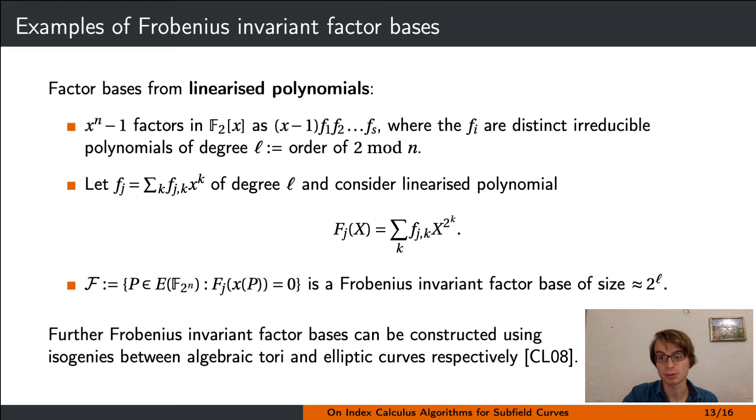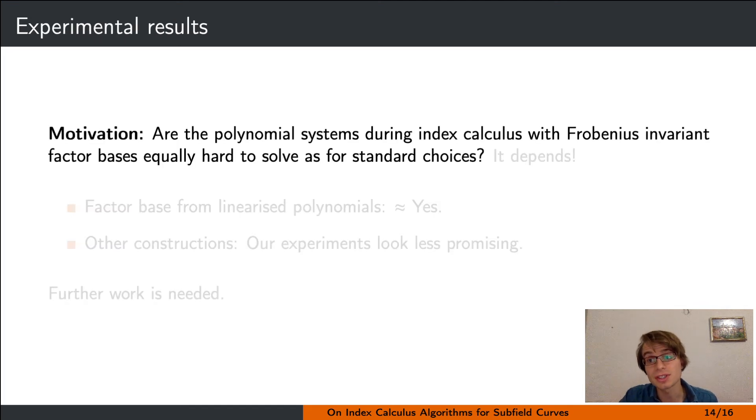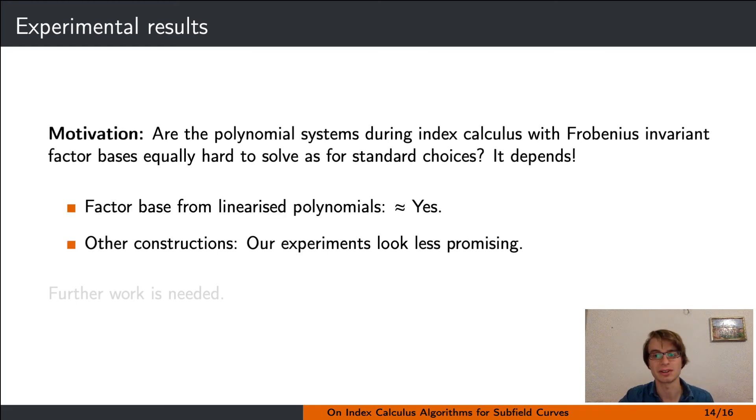Some viewers might have noticed a detail I have skipped over so far. While we reduce the number of polynomial systems that need to be solved during index calculus when using Frobenius invariant factor bases, it is a priori not clear whether the system that remains to be solved can be solved in the same time as when more standard choices are used. Well, we ran some experiments on instances that were small enough to yield results, and we found that the answer seems to be that it depends. For factor bases from linearized polynomials, the results looked good and suggested that it takes roughly the same time.